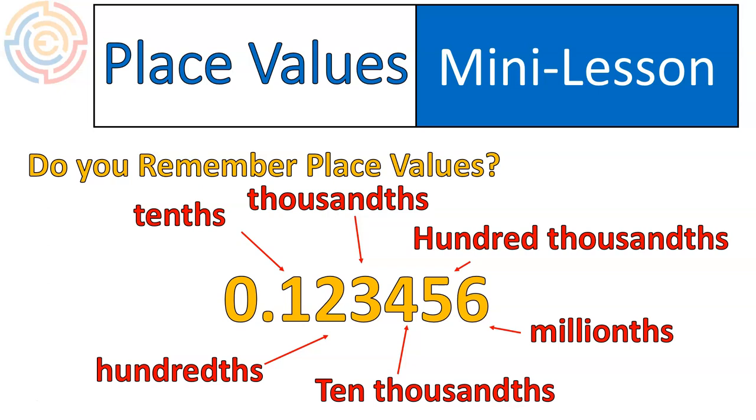And you probably won't get to this point, but it's good to know that that's where they go, and then it goes ten millionths, hundred millionths, etc. But the point is that these are the place values.